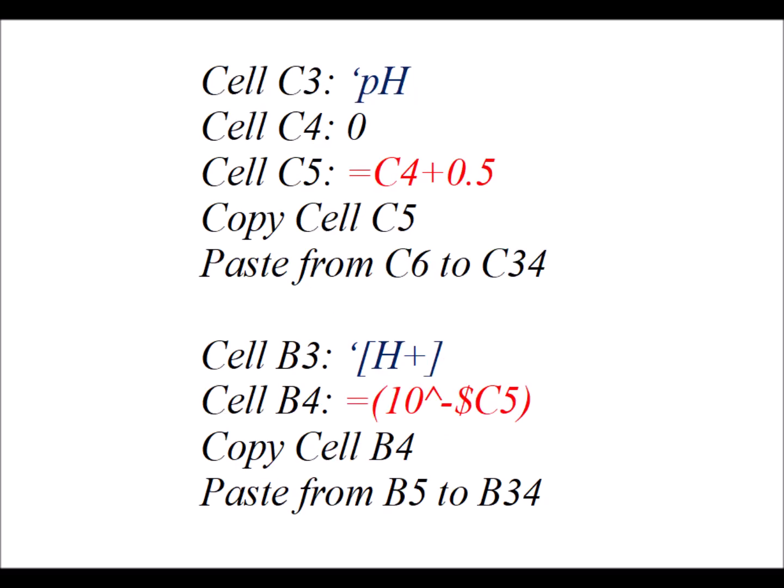In cell C3, we type the label pH. In cell C4, we type the value 0. In cell C5, we have the formula equals C4 plus 0.5. Then we copy cell C5 and paste it from C6 to C34. In cell B3, we put the label concentration of H+. In cell B4, we have the formula equals 10 to the power minus C4. We're going to copy cell B4 and paste from B5 to B34.